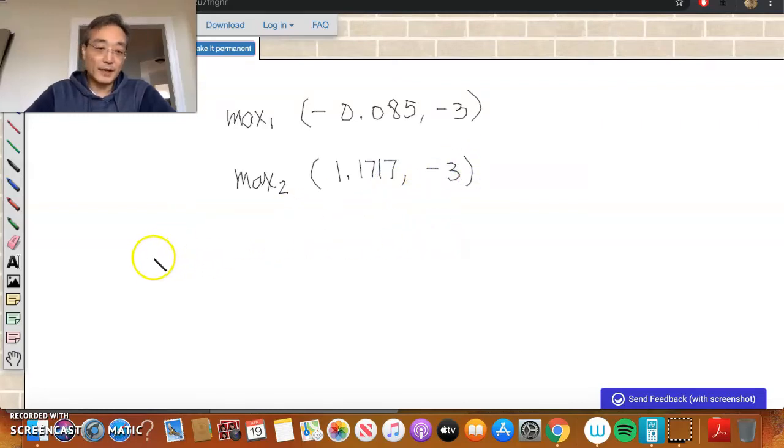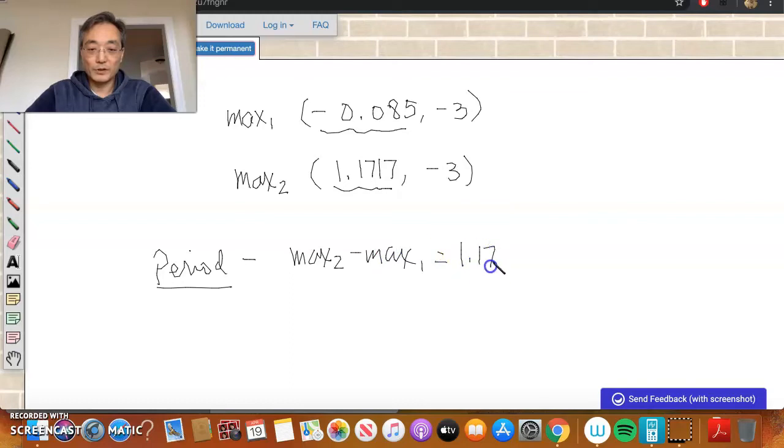And, as we said, the period is the horizontal distance. It's the horizontal distance from consecutive maxes or consecutive mins. So, since it's horizontal, we're going to take these two x values and subtract and see what the distance is. So, if I took max 2 minus max 1. I would get 1.1717, and that would be minus negative 0.085.